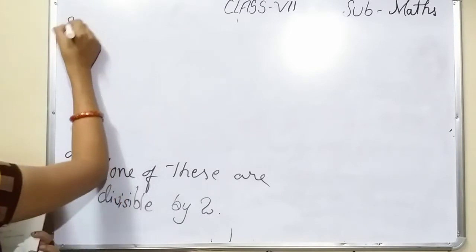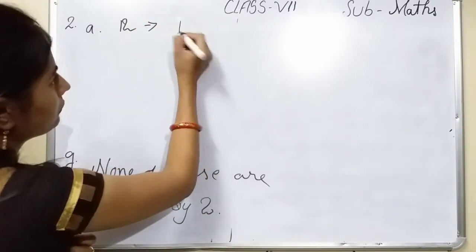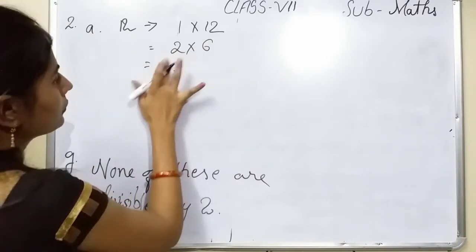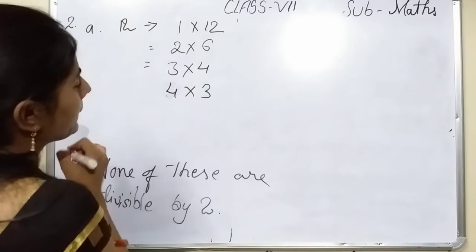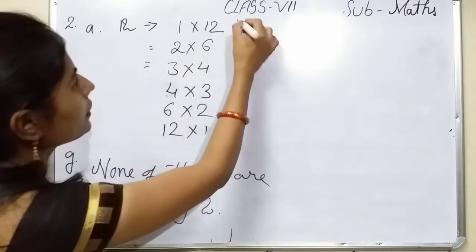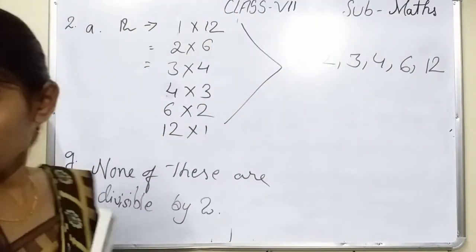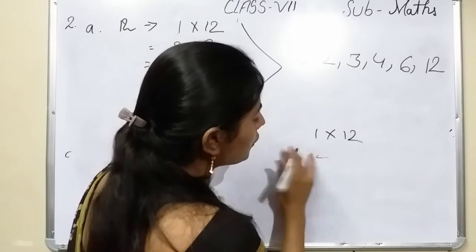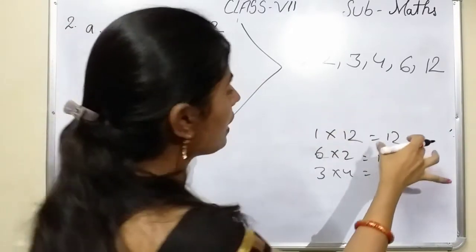Which are the factors of 12? We write: 1×12=12, 2×6=12, 3×4=12, 4×3=12, 6×2=12, and 12×1=12. So the factors are 1, 2, 3, 4, 6, and 12. To find factors, you multiply pairs of numbers whose product is 12. Your answer must be 12 — you can multiply any numbers but the result must be 12.